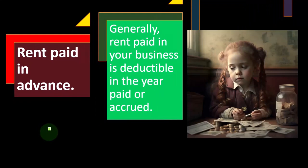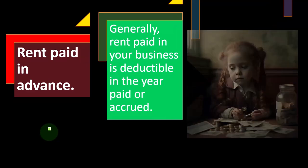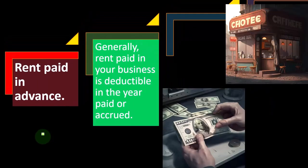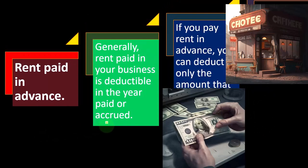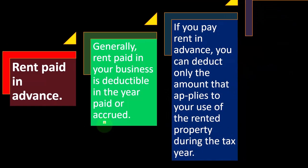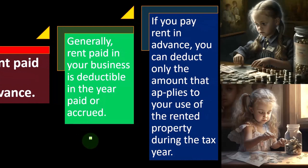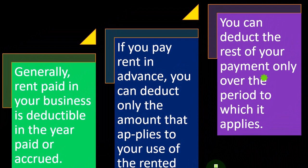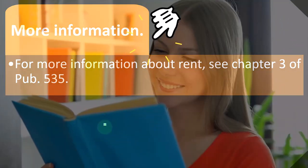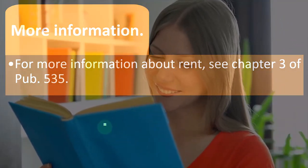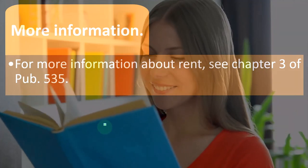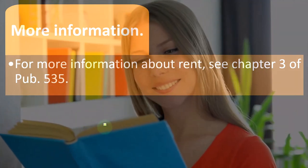Generally, rent paid in your business is deductible in the year you paid or accrued it. On an accrual basis, you deduct rent when you actually use the business office. If you pay rent in advance, you can deduct only the amount that applies to your use of the rented property during the tax year; you can deduct the rest only over the period to which it applies. For more information on rent, see Chapter 3 of IRS Publication 535 at irs.gov.